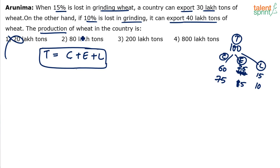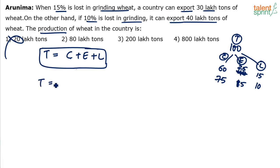There are two cases. In Case 1, if 15% is lost, the country can export 30 lakh tons. In Case 2, if 10% is lost, the country can export 40 lakh tons. Remember, total production remains the same in both cases. So: consumption plus export plus loss in Case 1 equals consumption plus export plus loss in Case 2. Now, T equals C plus 30 lakh tons plus 15% of T as the loss.